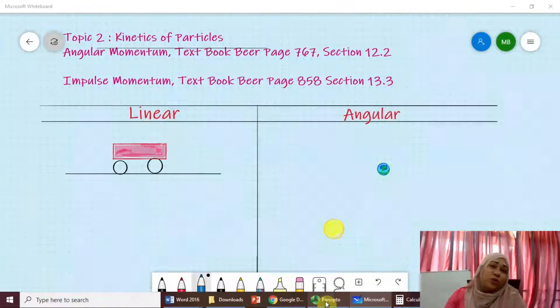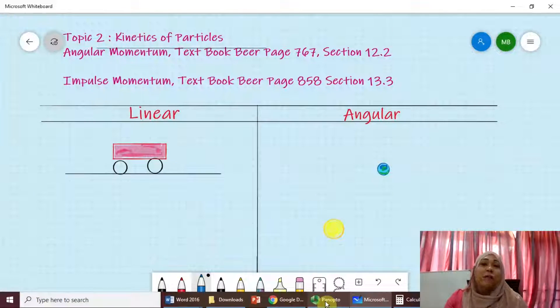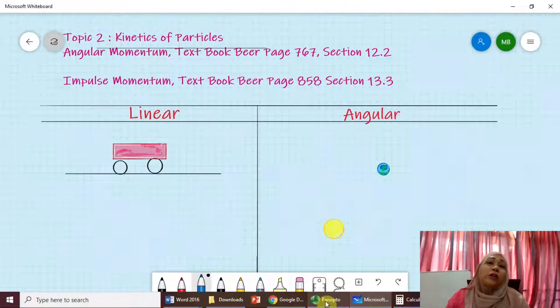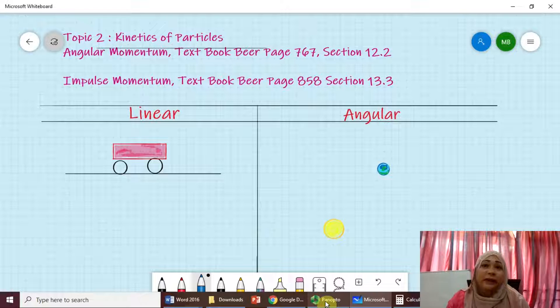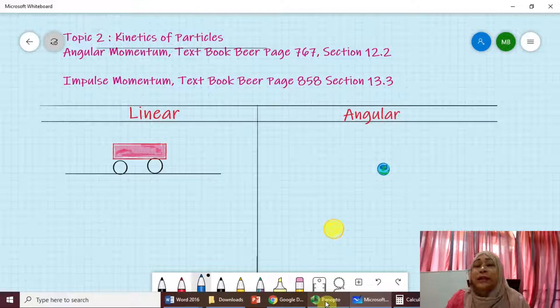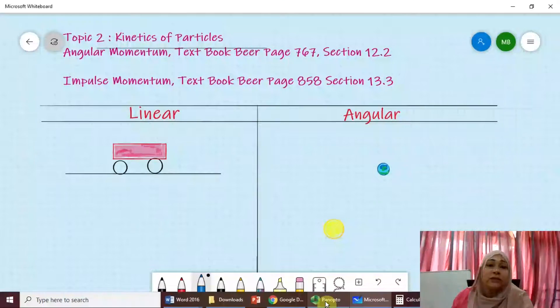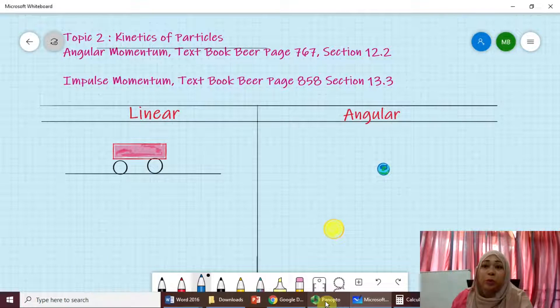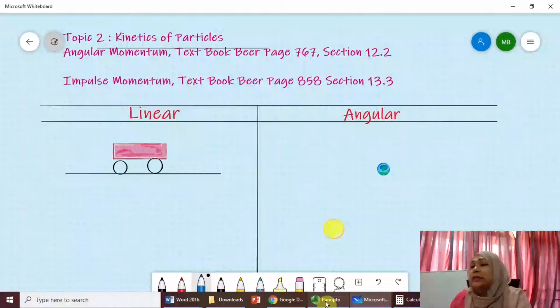Hi, welcome back to topic 2, kinetics of particles. So for this topic, you can get it in your textbook Beer for angular momentum at section 12.2, page 767, and for impulse momentum at your textbook, page 858, section 13.3.